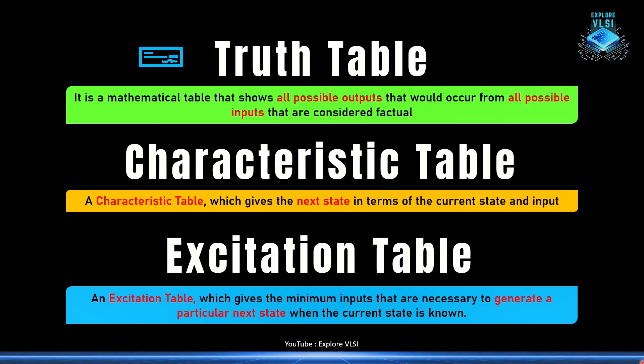What is a characteristic table? It provides the character of the design — specifically, what the next state will be when you have a current state of output and you are providing a certain input. We can predict the next state of output given the input combination and current state. The excitation table gives the minimum input combinations required to generate a particular next state. For example, if the output is 0 now and I need to generate 1 as the next state, I need to know what input to give for that flip-flop — that is what the excitation table tells us.